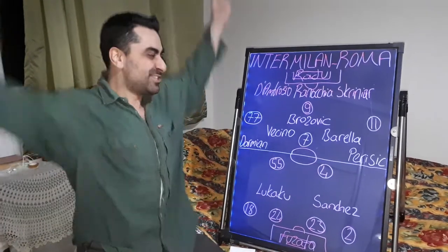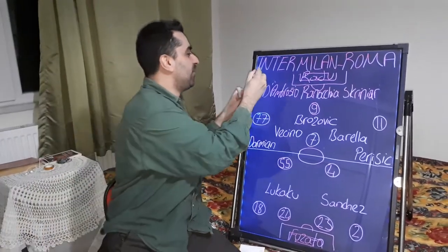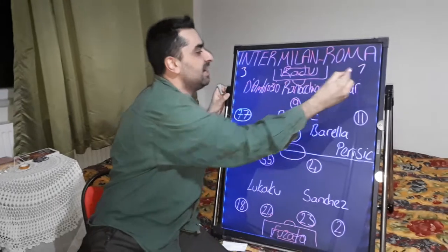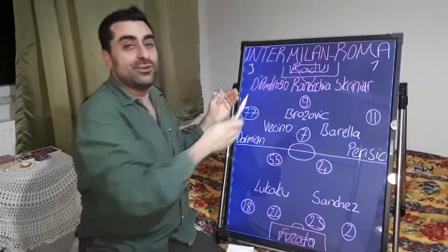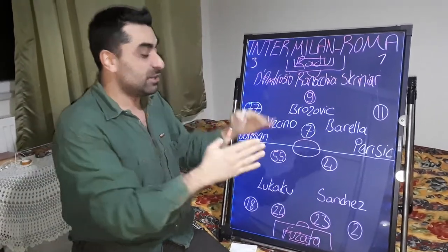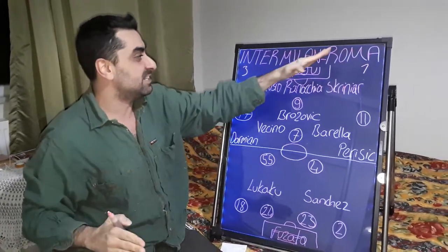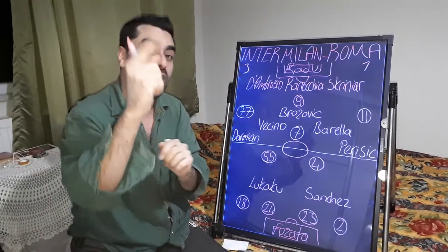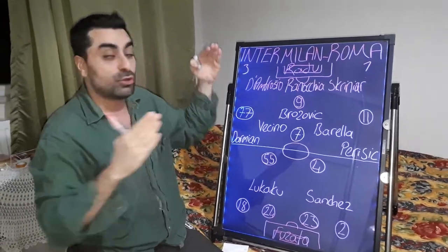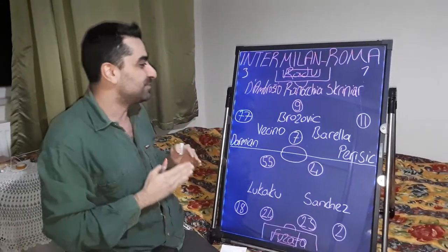This is Italian Football Lover channel. Inter Milan won 3-1 against Roma. Vecino, Brozovic and Lukaku scored the goals for Inter, and Mkhitaryan scored one goal for Roma. I want to talk about the tactics and analysis of this game.